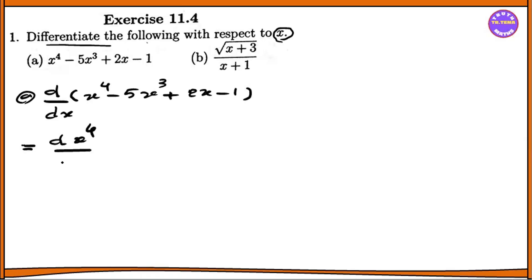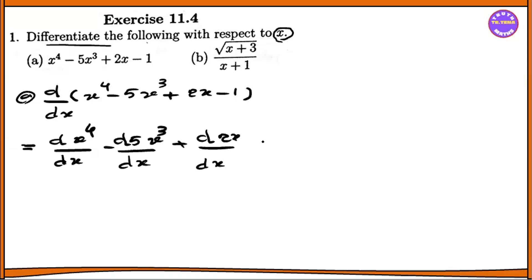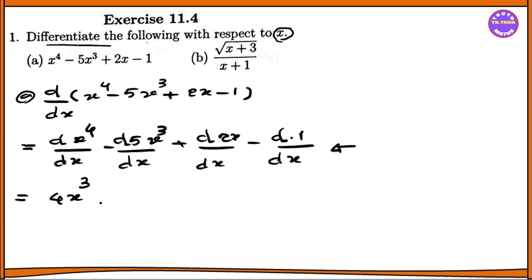We apply linearity: d(x⁴)/dx minus d(5x²)/dx plus d(2x)/dx minus d(1)/dx. The layers of the power rule give us: for x⁴ we get 4x³, for minus 5x² we get minus 10x, then 2x gives 2, minus 1 is a constant, so it gives 0.